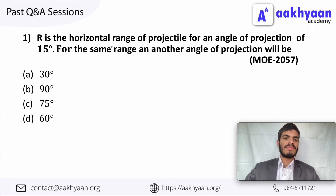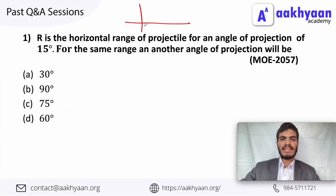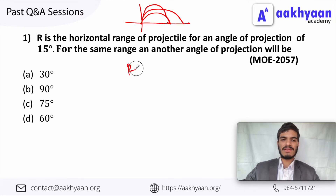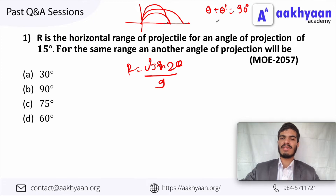I have given the question. R is the original range of a projectile for an angle of projection of 10 degrees. For the same range, another angle of projection will be? Now for the same range we fire a projectile. There is a range formula: u squared sin 2theta divided by g. The conjugate angle — the sum of the two angles is 90 degrees — will give the same range.